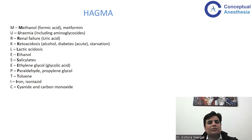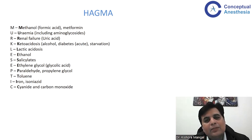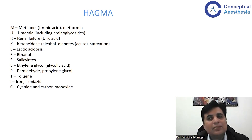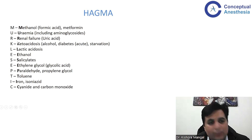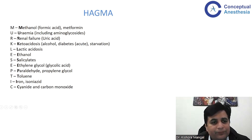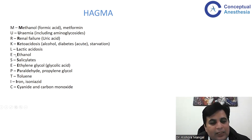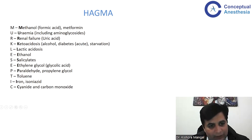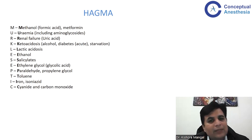Coming to high anion gap metabolic acidosis etiology: a commonly used mnemonic is MERKLSEEEIC. M for methanol and metformin, U for uremia, R for renal failure, K for ketoacidosis (alcoholic, diabetic, and starvation), L for lactic acidosis, E for ethanol, S for salicylate, E for ethylene glycol, E for paraldehyde and propylene glycol, T for toluene, I for iron and isoniazid, and C for cyanide and carbon monoxide. This covers most of the major reasons that can cause high anion gap metabolic acidosis.